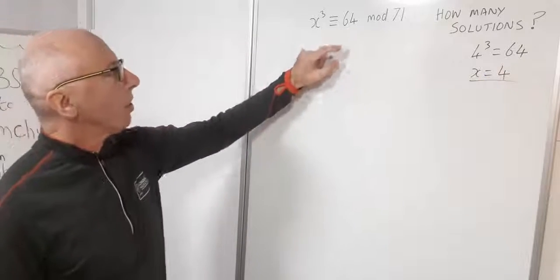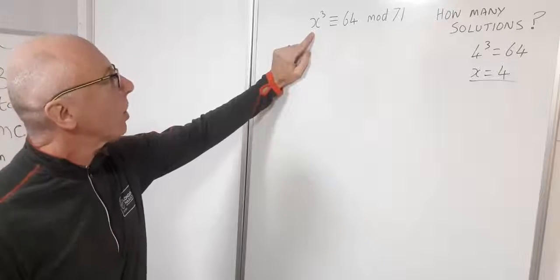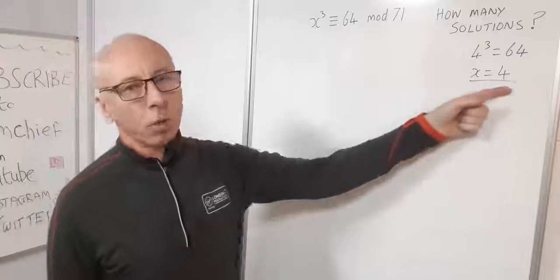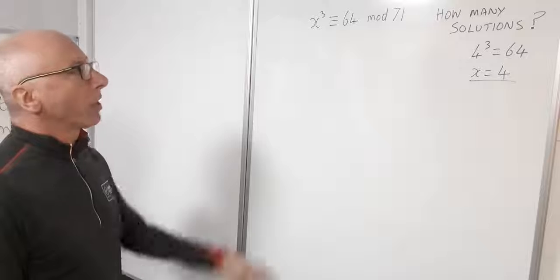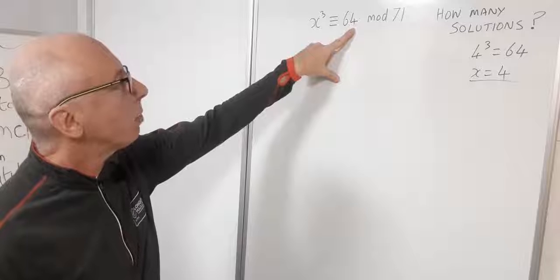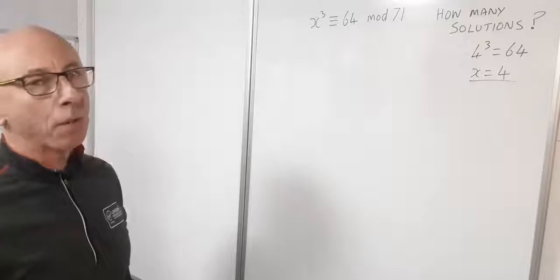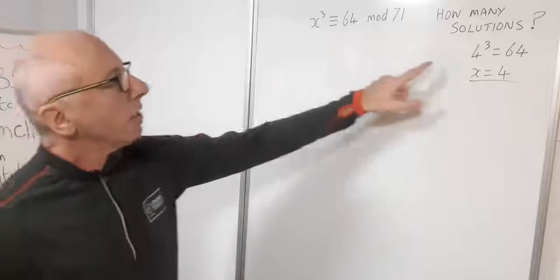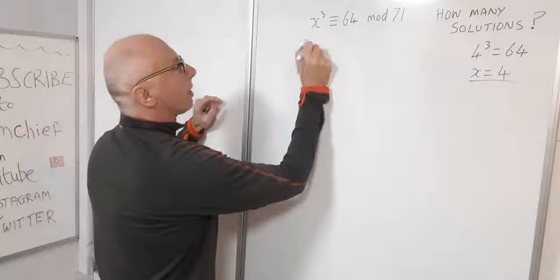Now I'm looking to find other solutions. We know straight away that 0, 1, 2 and 3 aren't going to work because their cubes won't be congruent to 64 modulus 71. But what about all the ones after 4? If we take 5 cubed, that's 125, which is not congruent to 64 modulus 71. So we need to use algebra and other techniques from our toolbox. Since 64 is 4 cubed, let's rearrange and work on that.